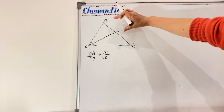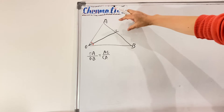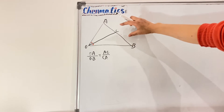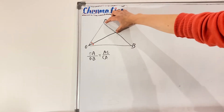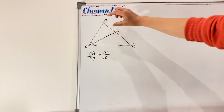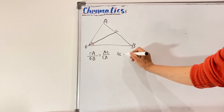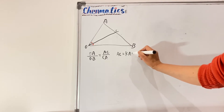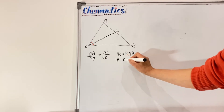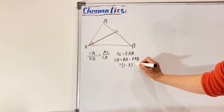We can see that AC and AB are in the same direction, which means if we let AB be a vector, then AC will be the same vector but with a different length. The length of AC will be a fraction of the length of AB. If I let that fraction be K, then AC equals K times AB, and CB becomes AB minus K times AB, which equals (1 minus K) times AB.